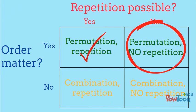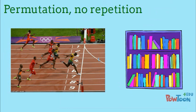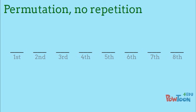How about permutations without repetition? Examples of permutations without repetition include rankings and arranging books on a bookshelf. Consider the ways that 8 runners could finish the 100 meter final. We have 8 places and we'll fill them one by one.